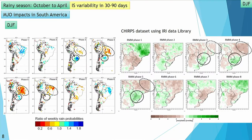For the DJF season, the colors indicate where the probability of exceeding the upper tercile in weekly average rainfall would be higher or lower than normal. After applying statistical significance using Monte Carlo techniques, we found a dipolar signal related to different phases of the MJO, mostly around phases three to five. Using the CHIRPS dataset and the IRI Data Library to make composites of the RMM phases, you can still see this dipolar signal between the SACZ region and southeastern South America, and the opposite phase on RMM phases one and eight.